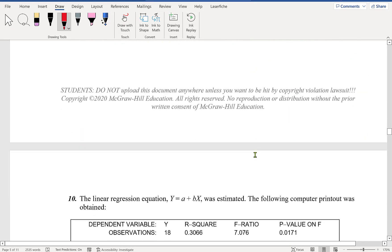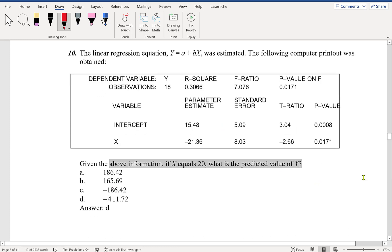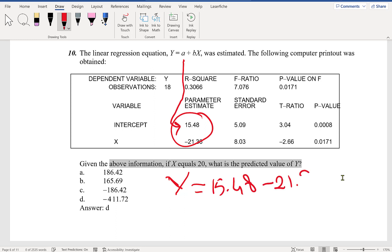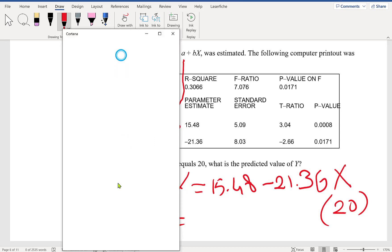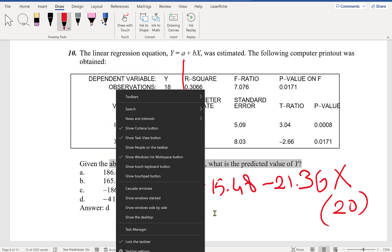Number 10: Given the above information, if X equals 20, what's the predicted value of Y? This is super easy—just plug in the estimated parameters. Instead of a, put a-hat, 15.48, minus 21.36 times X. So plug in 20 here. I'm going to pull up a calculator.